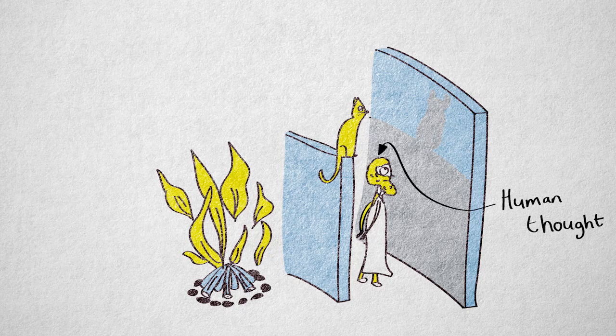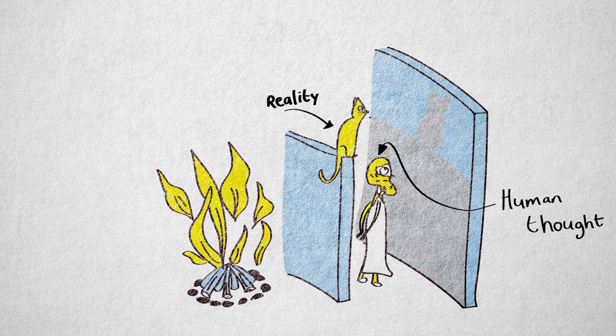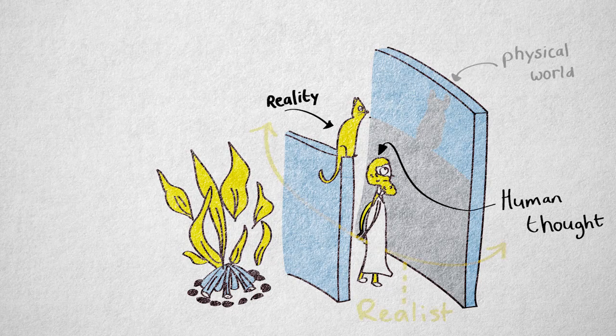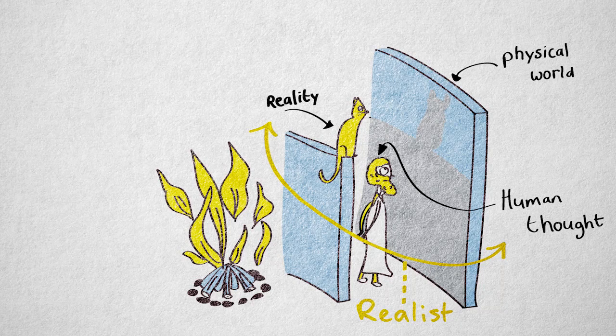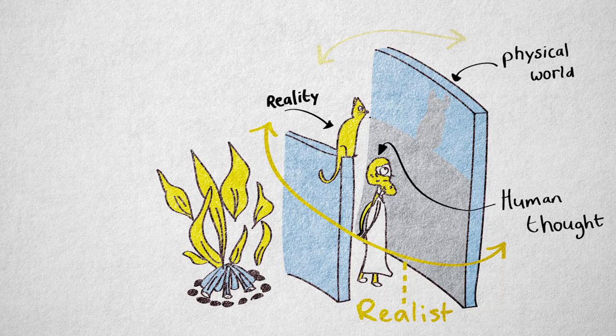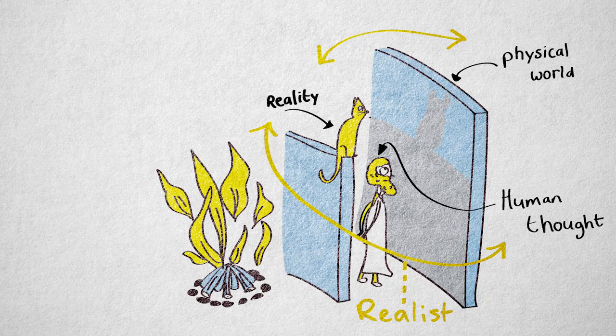Plato was a philosophical realist. He thought reality, in his case the world of forms, exists independently of human thought. To Plato, these forms are not just abstract concepts in our mind. They really exist, but separately from the physical world.